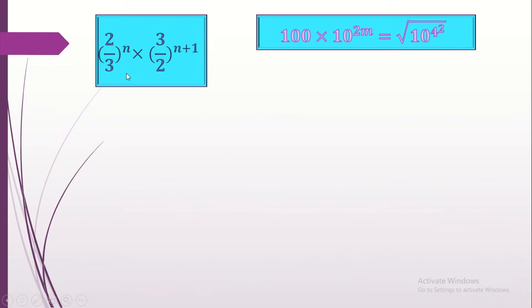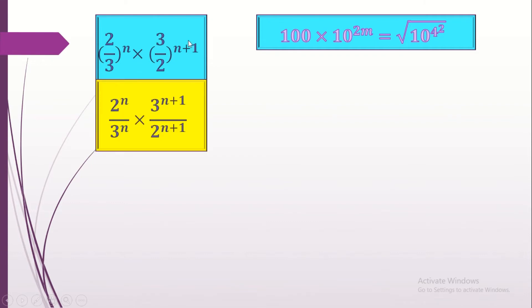Next, calculate (2/3) to the power n times (3/2) to the power n plus 1. Distributing the powers over the fractions gives (2 power n over 3 power n) times (3 power n plus 1 over 2 power n plus 1). Simplifying same bases: for base 2, the exponent is (n+1) minus n = 1, giving 2 power 1 = 2 on the denominator. For base 3, (n+1) minus n = 1, giving 3 power 1 = 3 on the numerator. The answer is 3 over 2.